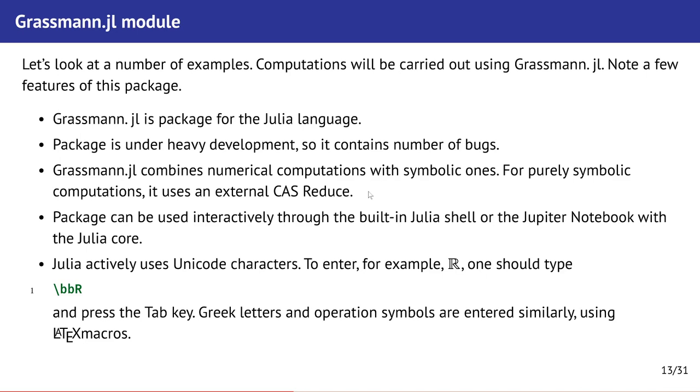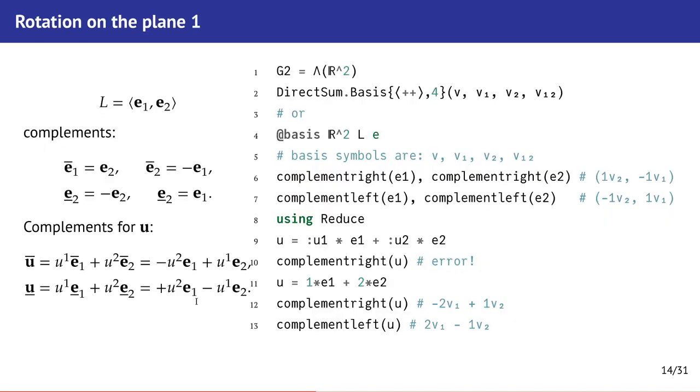Julia also actively uses Unicode characters. For example if we want to input ℝ letters to denote real numbers, we should use LaTeX macros backslash bb R and type and press tab key.